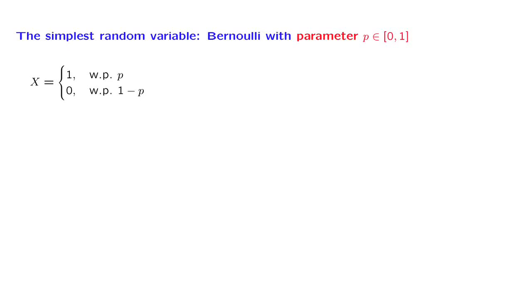We now want to introduce some examples of random variables, starting with the simplest conceivable random variable: a random variable that takes the values 0 or 1 with certain given probabilities. Such a random variable is called a Bernoulli random variable, and the distribution is determined by this parameter p,